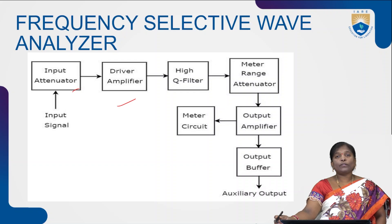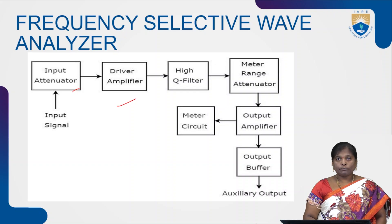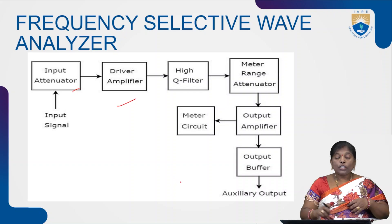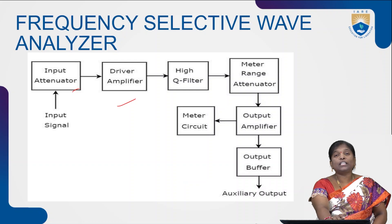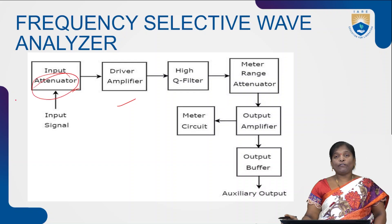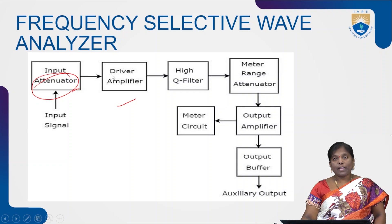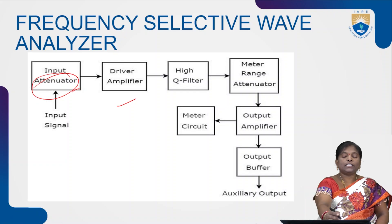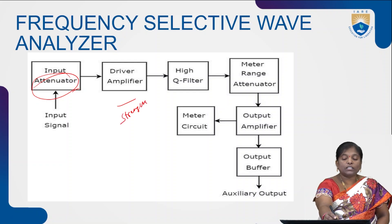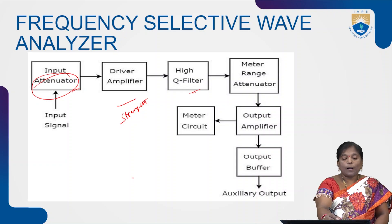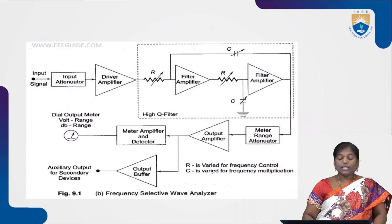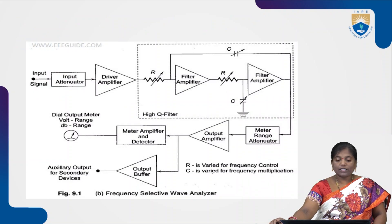To find out the frequency response at one particular frequency, if we transmit the entire input signal, we won't get the output properly. So at the initial stage, we use an attenuator to avoid noise — only the required amount of input signal passes through. The driver amplifier is used to amplify and strengthen the input signal, which then passes through the high-Q filter containing a combination of RC circuits.